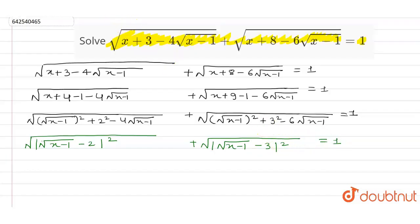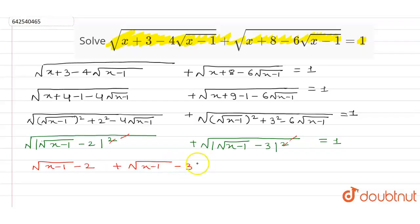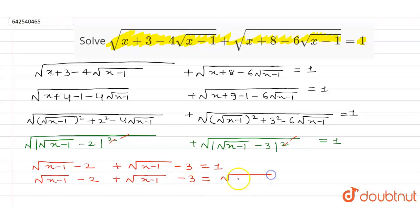I can cancel this square by this root, and this square by this root. So I can also write it as |√(x − 1) − 2| + |√(x − 1) − 3| = 1.